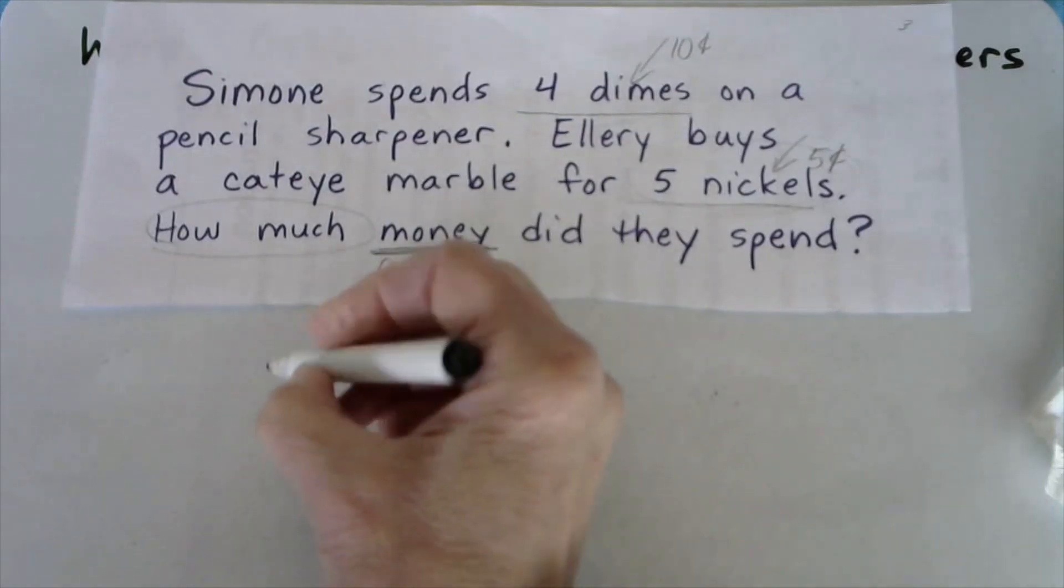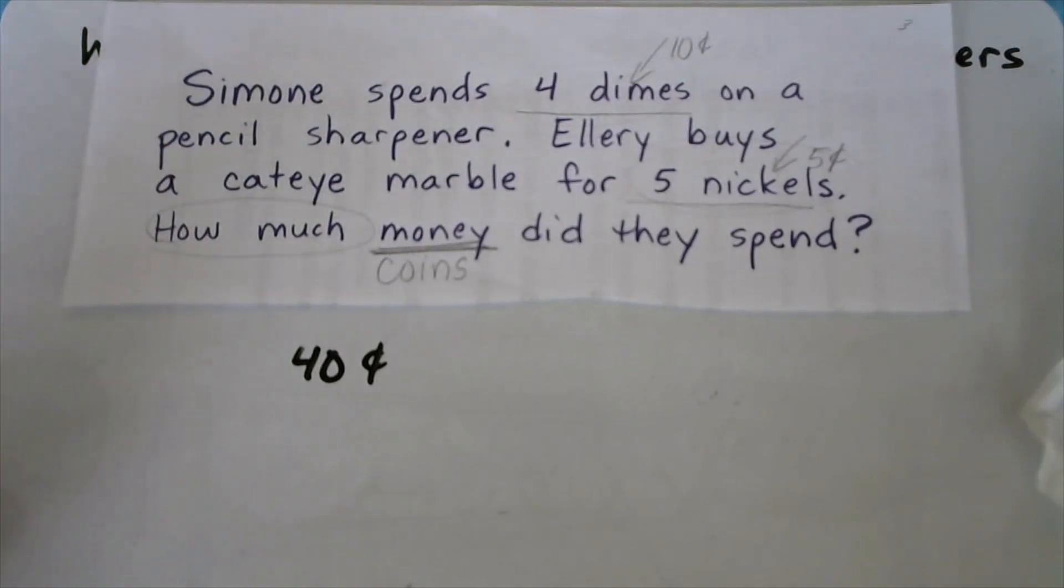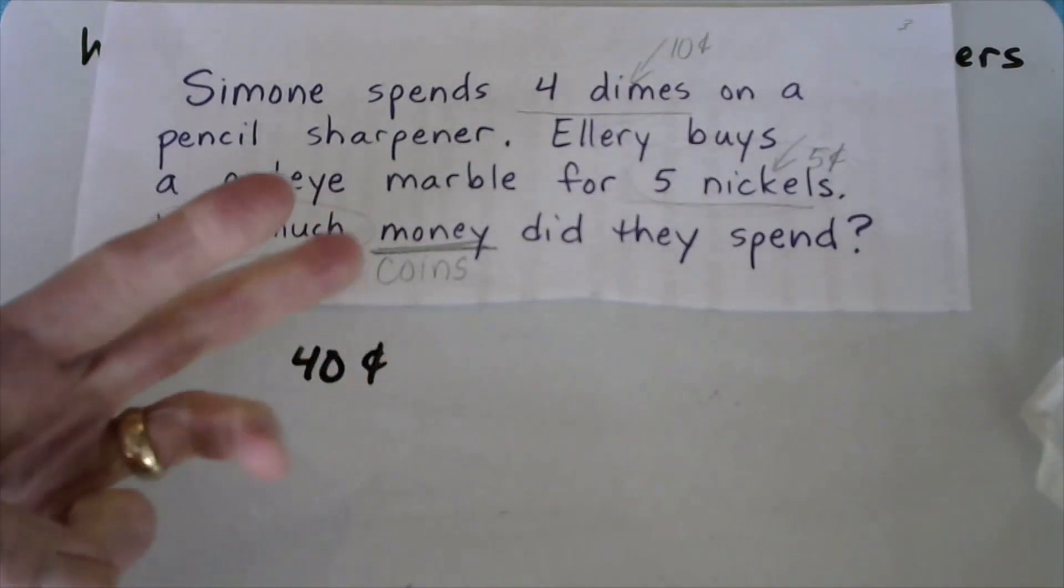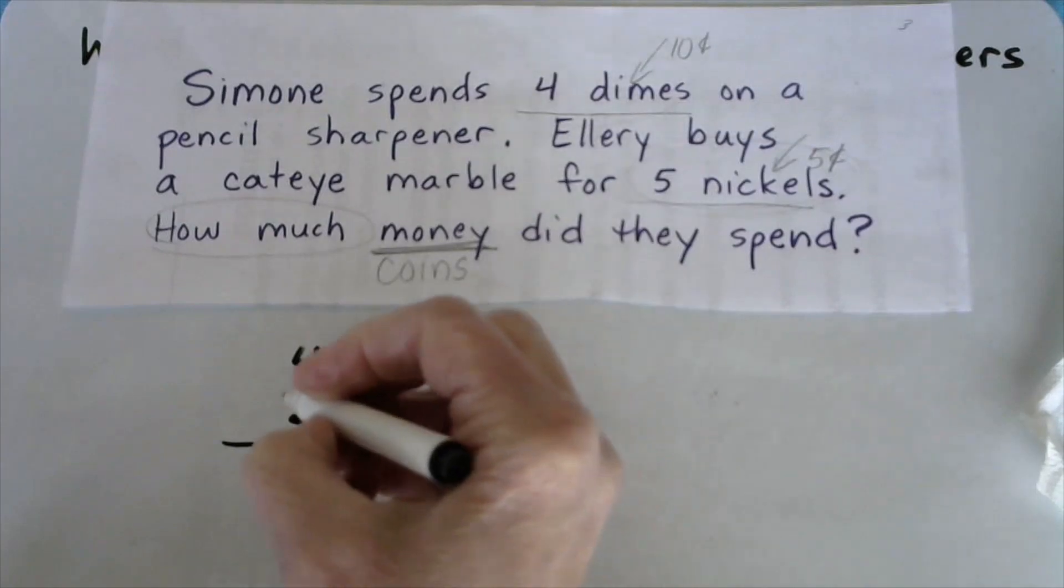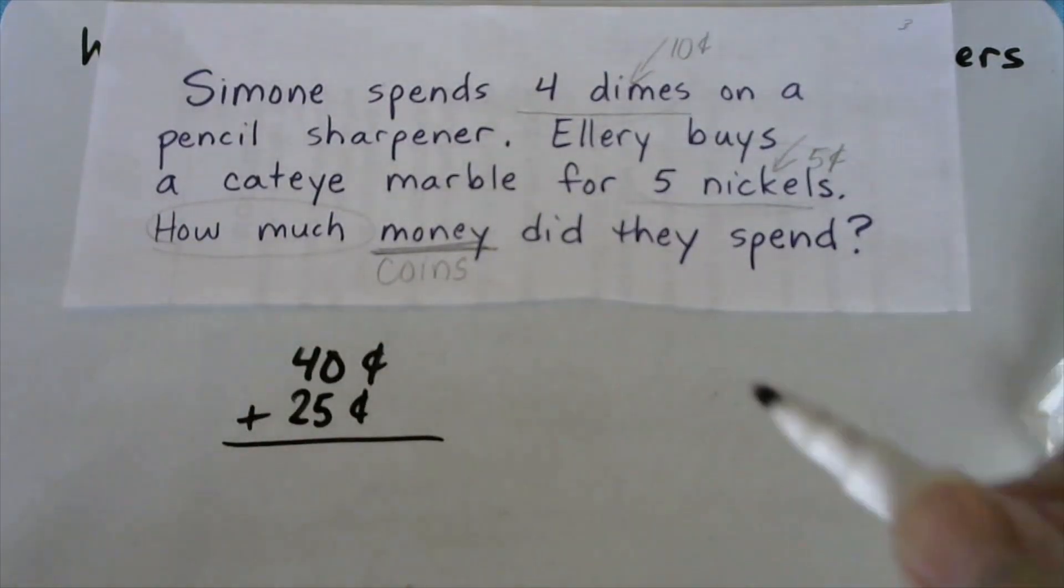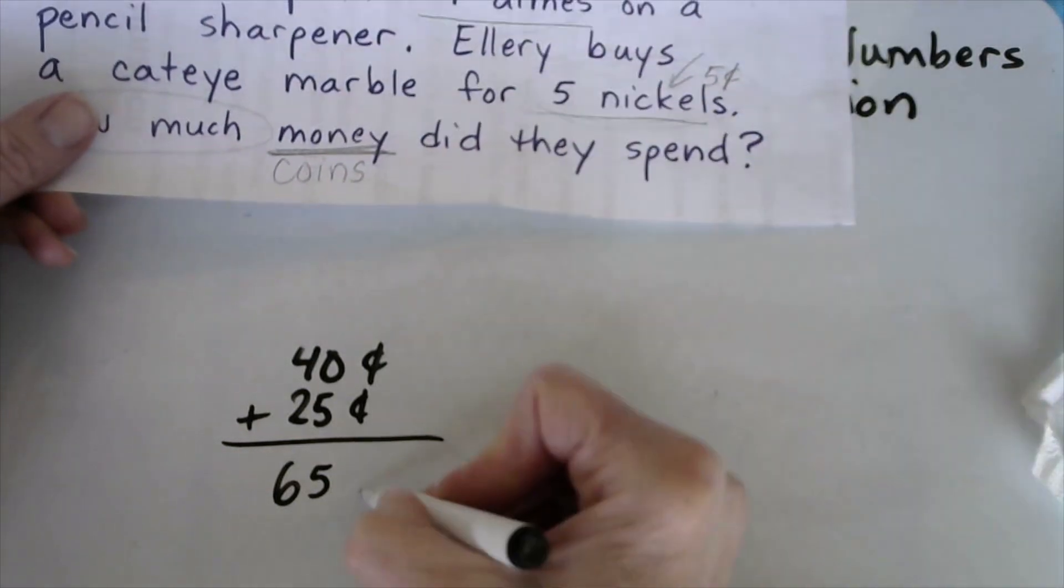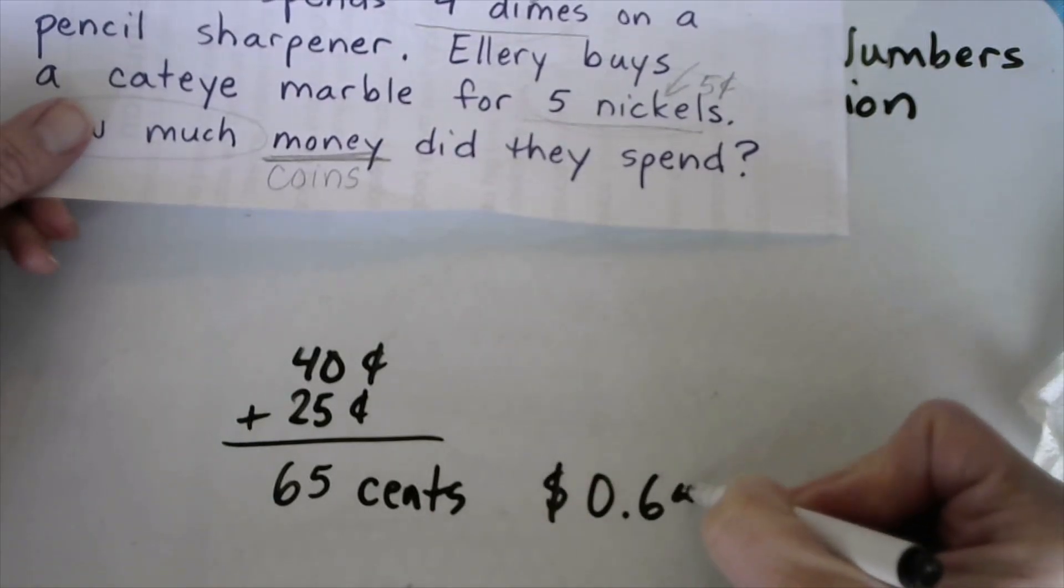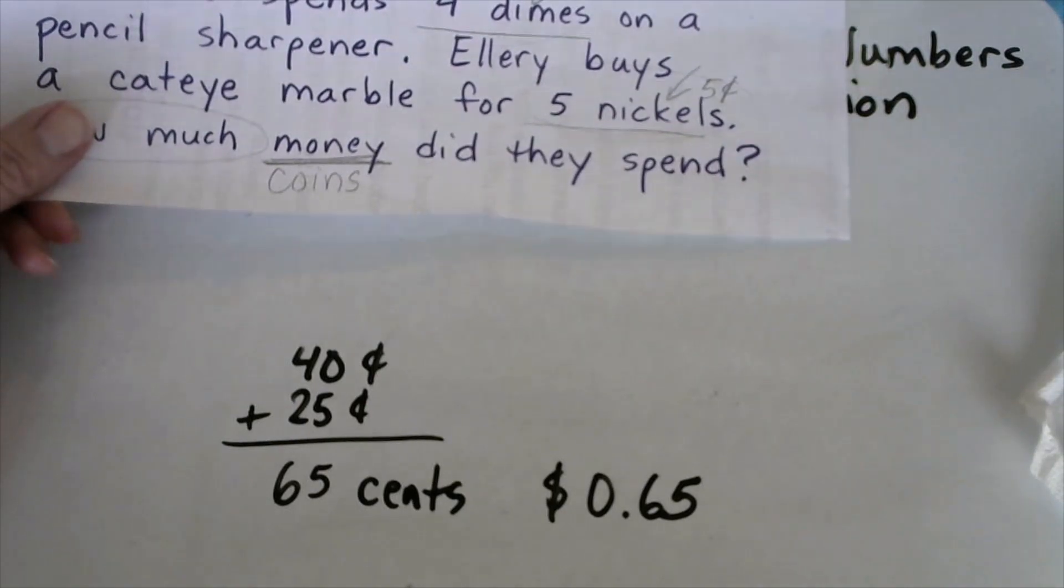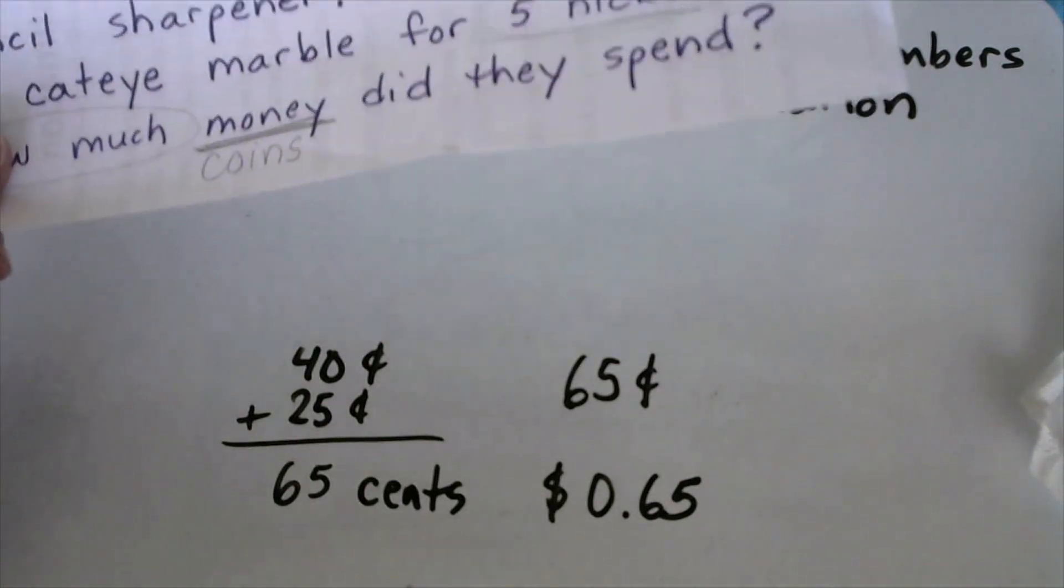We're going to do it the proper way. So Simone, four dimes, we know that would be 40 cents. And Ellery, five nickels, I can count by fives five times and find out the value of five nickels. Five, ten, fifteen, twenty, twenty-five. So he spent 25 cents for his marble. And we can use the algorithm, zero plus five is five, 40 plus 20 is 60, and so the answer would be 65 cents. Or you could have written it this way, or you could have written it this way.